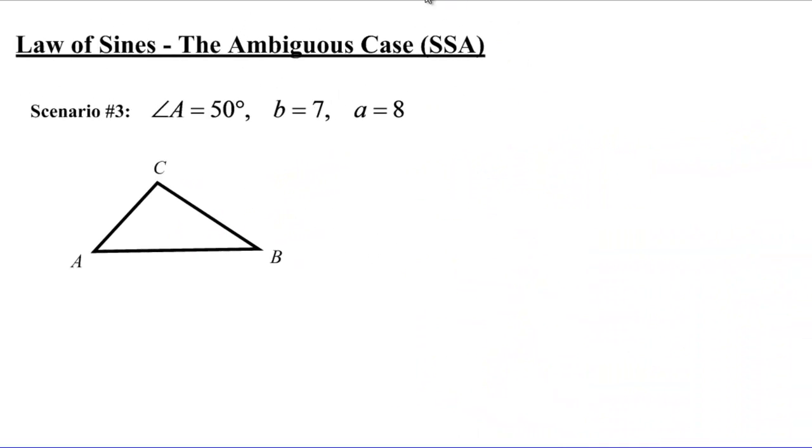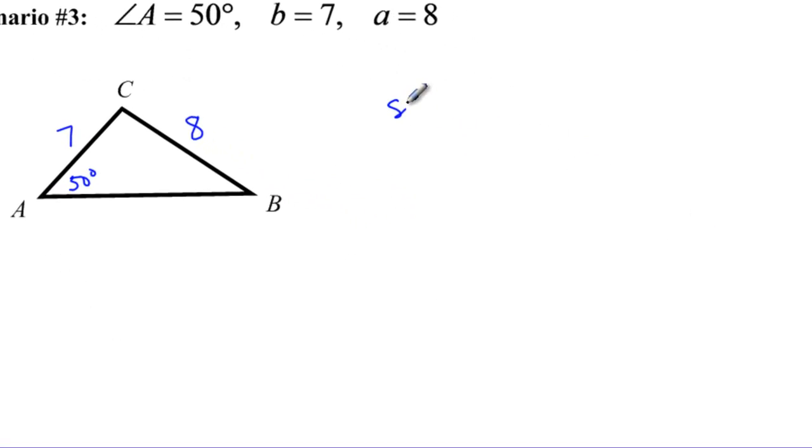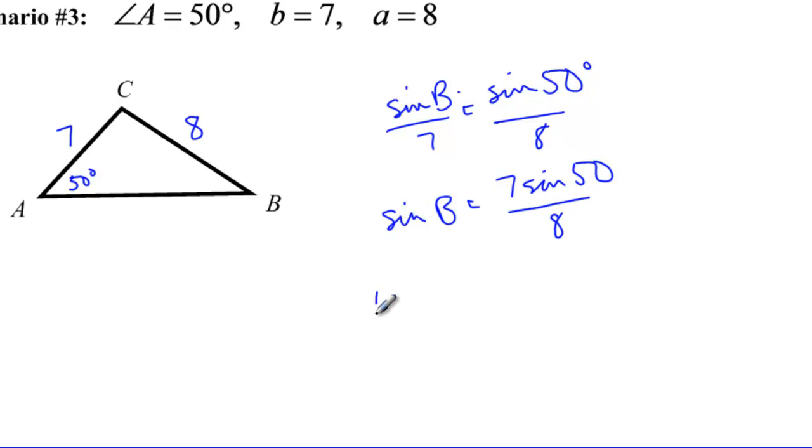Now let's just go to the last scenario. Last scenario has angle A at 50 degrees, side B at 7, and side A at 8. And when I go and I set this up, I say sine of B over 7 equals sine of 50 over 8. Multiply both sides by 7 and I get sine of B equals 7 sine of 50 over 8. To get B by itself, I do the sine inverse of 7 sine of 50 over 8. And B is equal to 42 degrees.